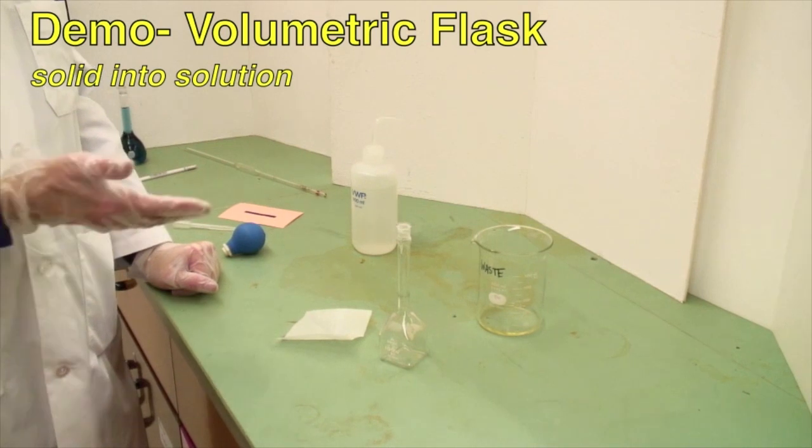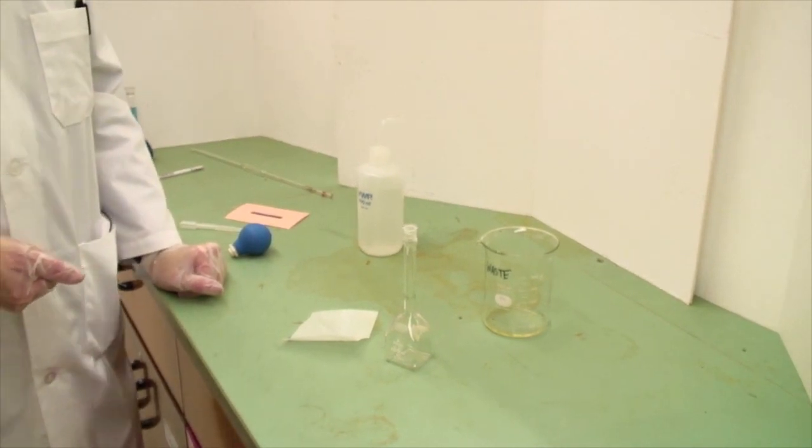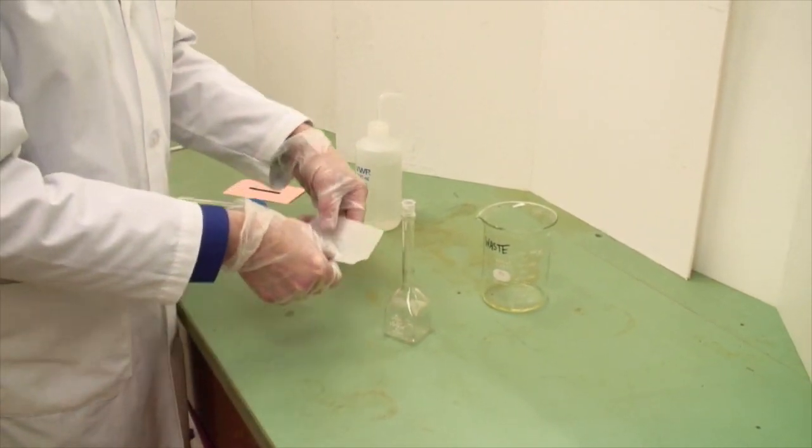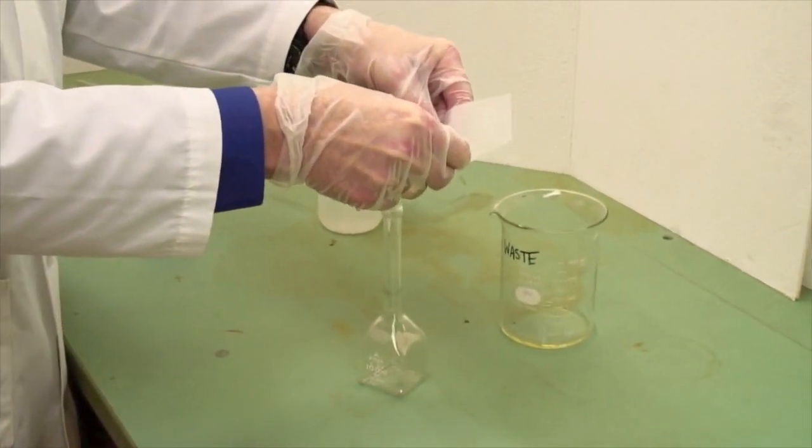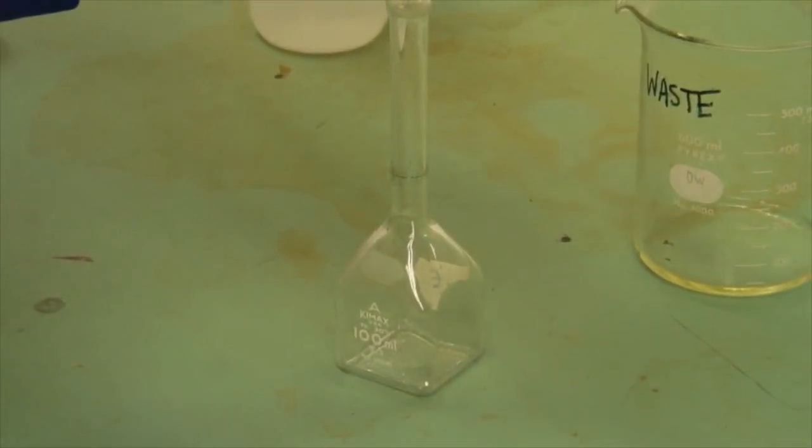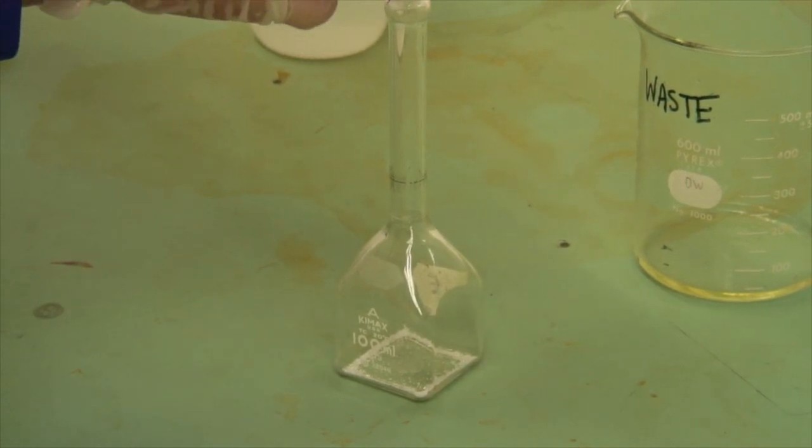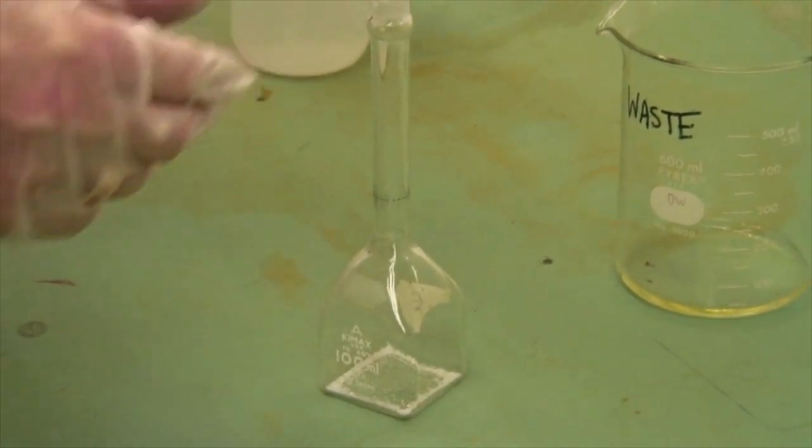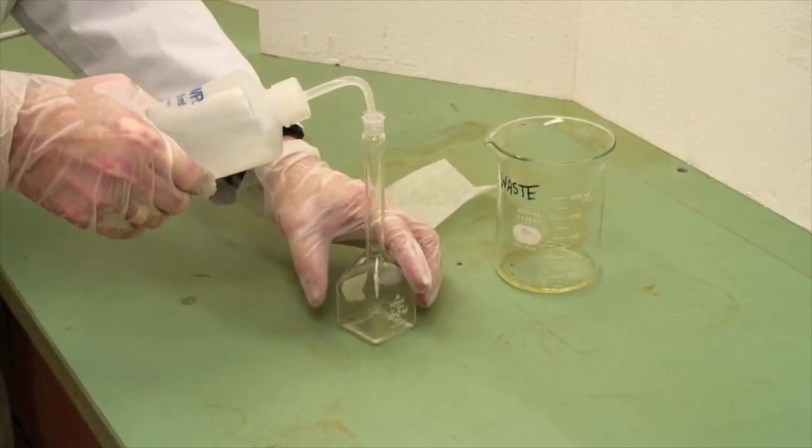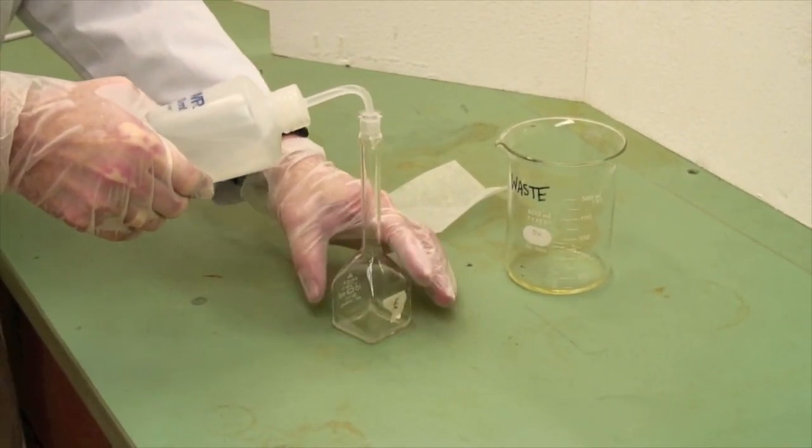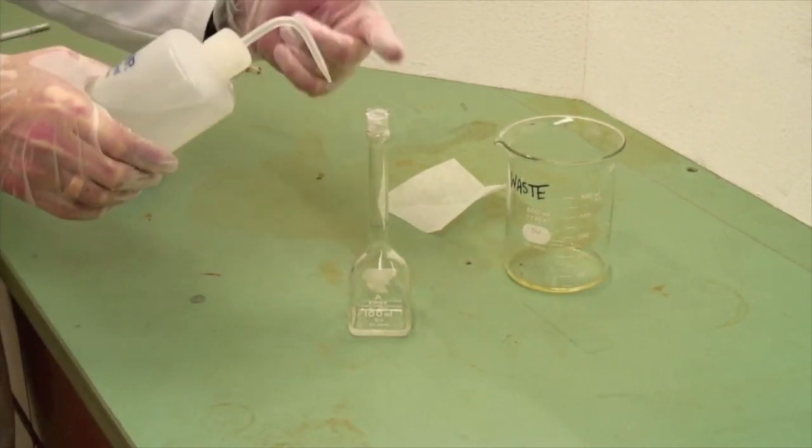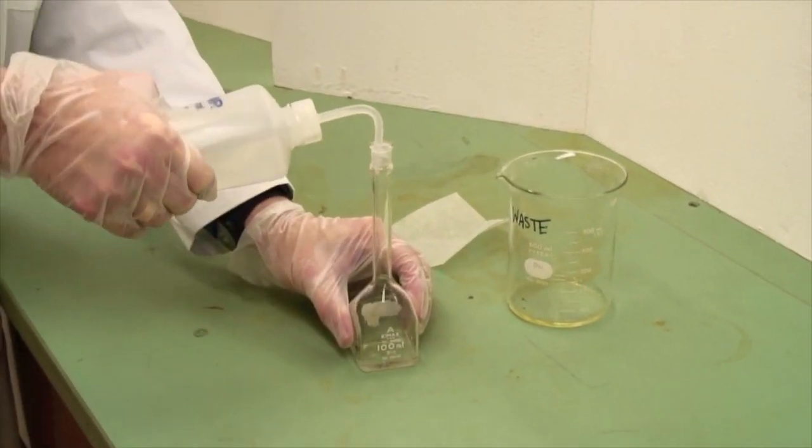Now here I've got a previously weighed amount of solid. And we dispense this carefully into the volumetric flask itself. Make sure that everything comes off. And again, use your squeeze bottle to wash everything down inside. If you used a funnel to get this in, use the wash bottle to rinse the funnel to make sure that everything has gone inside.